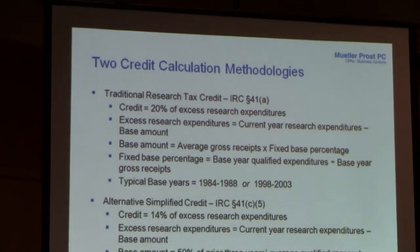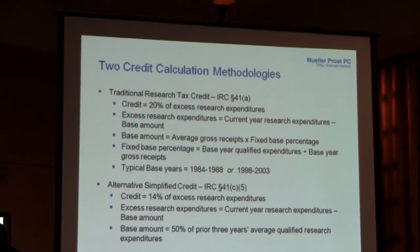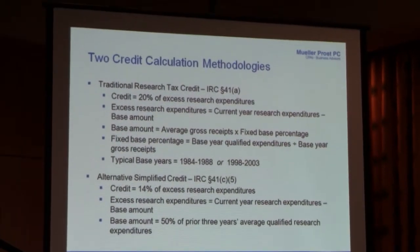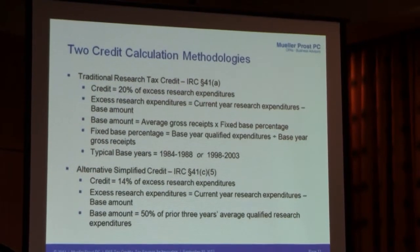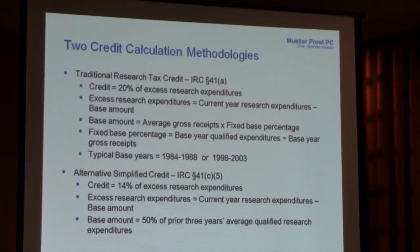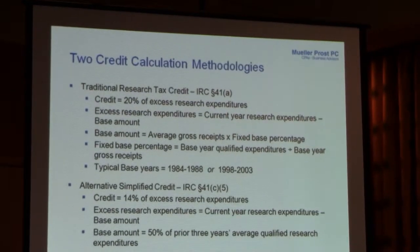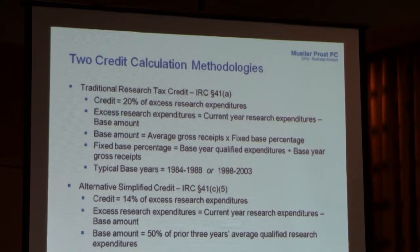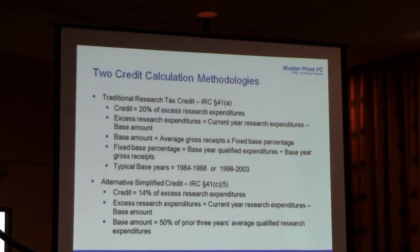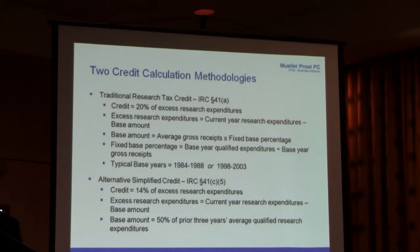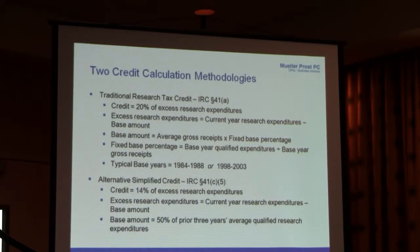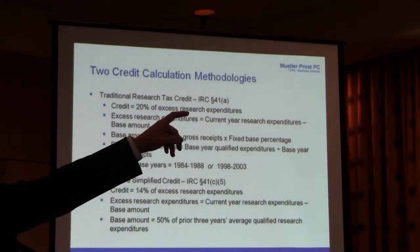There are two different credit methodologies. The traditional credit was written in 1989, so the rules reference the base period of 1984 to 1988. It's equal to 20% of the excess over a base amount. The base amount is the product of a fixed base percentage times average gross receipts for the prior four years. The fixed base percentage is calculated by dividing qualified research expenditures by gross receipts during that base period — that's the percentage of today's sales I have to exceed before receiving my first dollar of credit. It's pretty onerous going back nearly 30 years under today's definition of research, though I am allowed to use estimates corroborated by existing documentation.